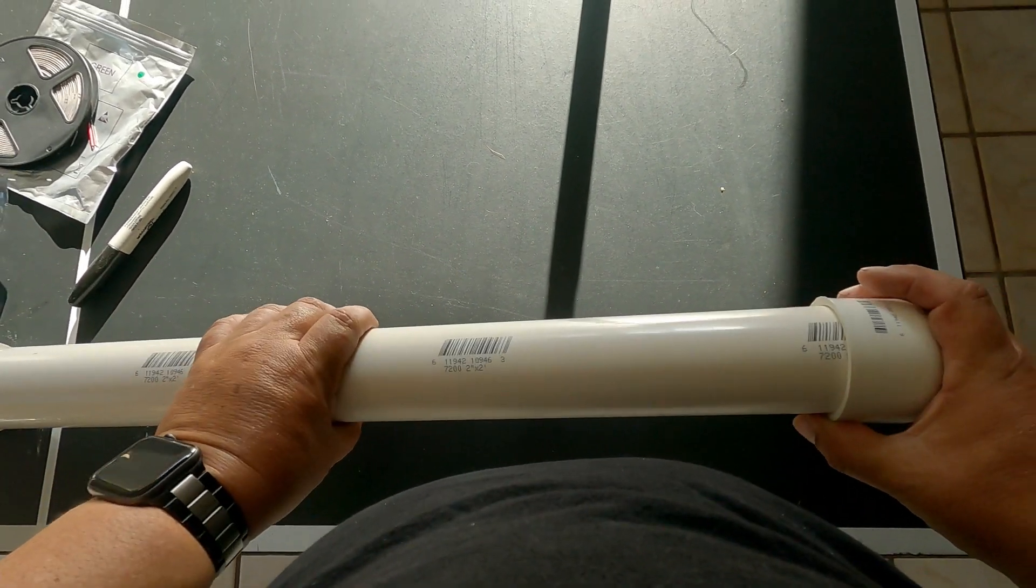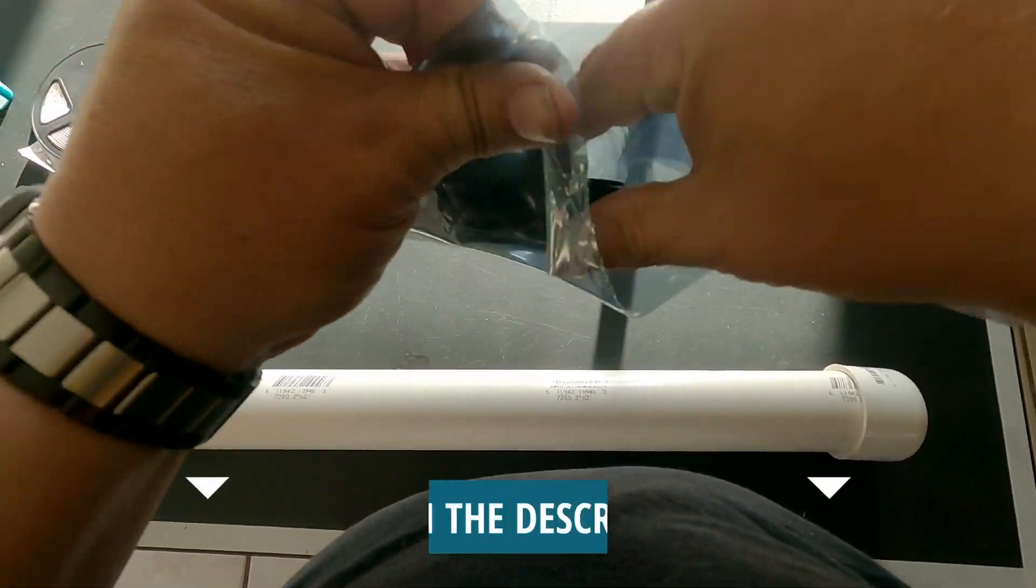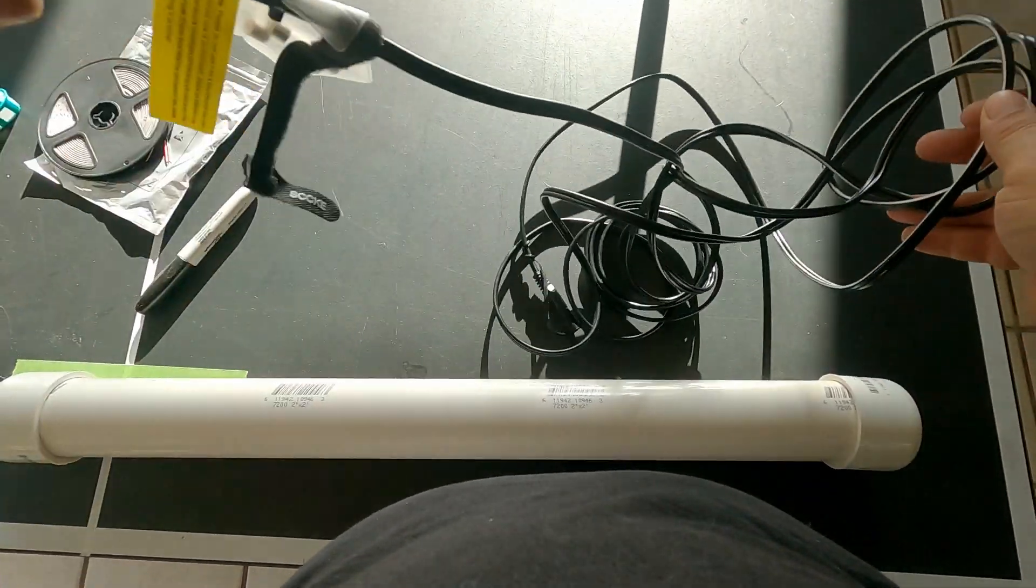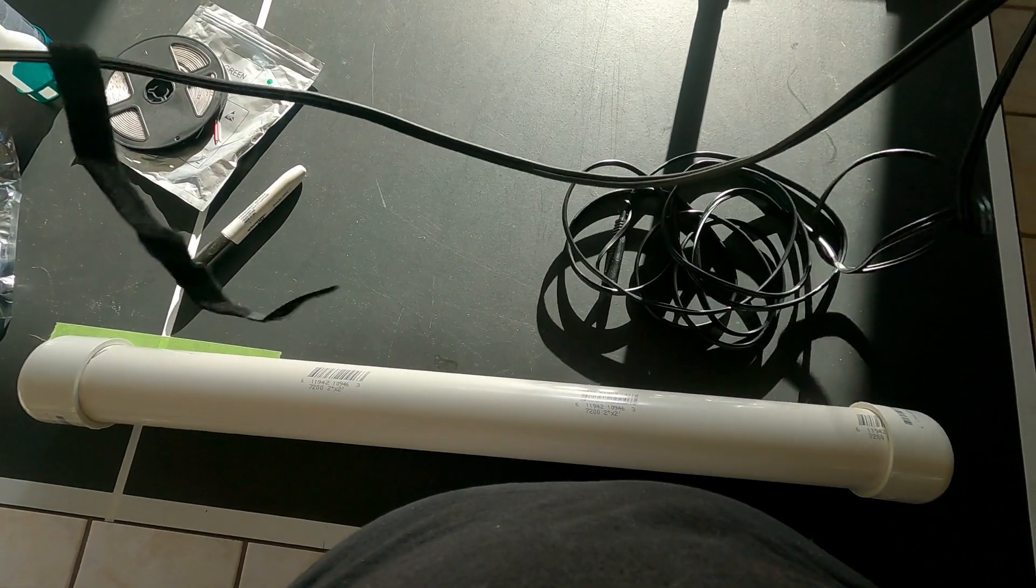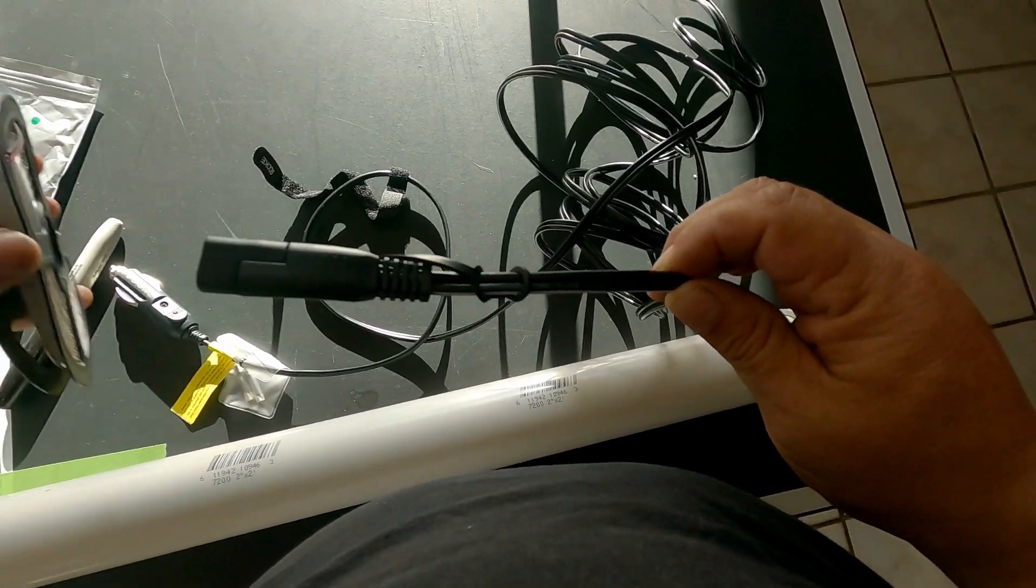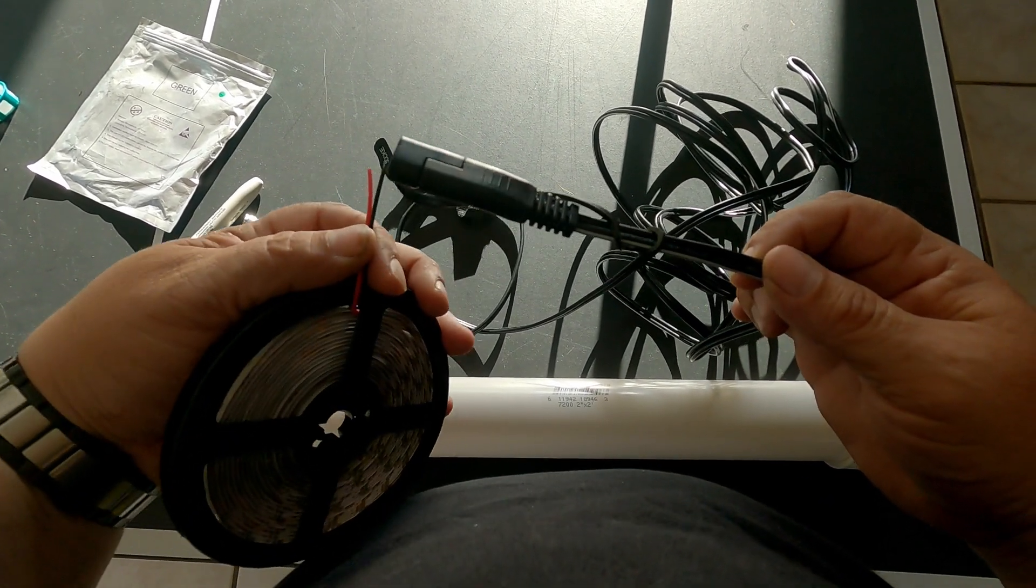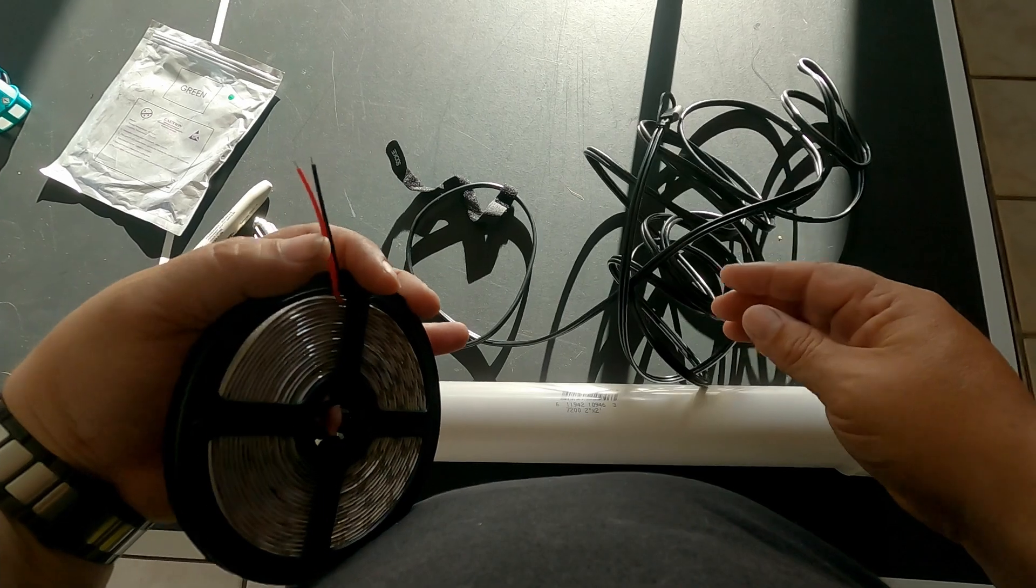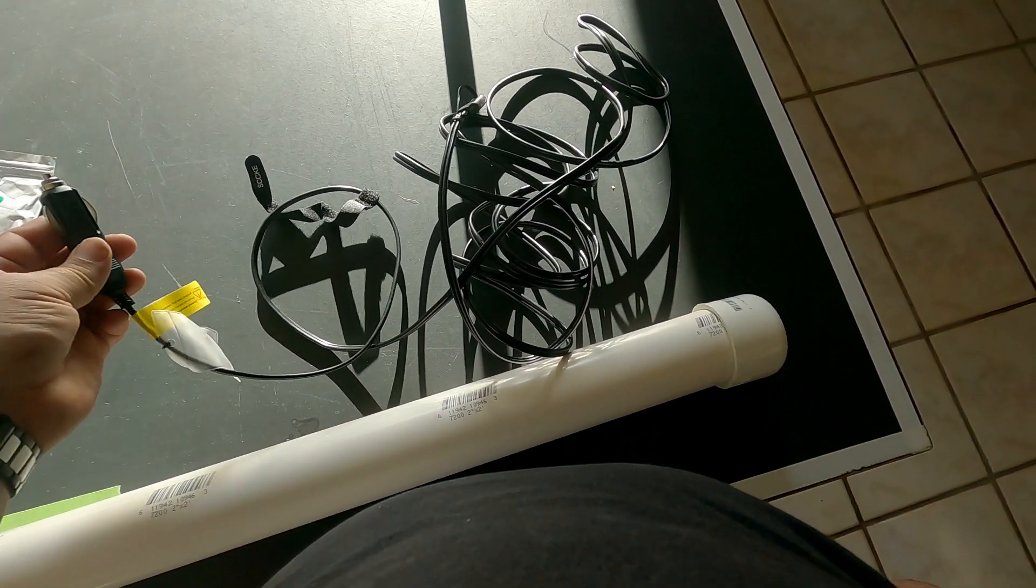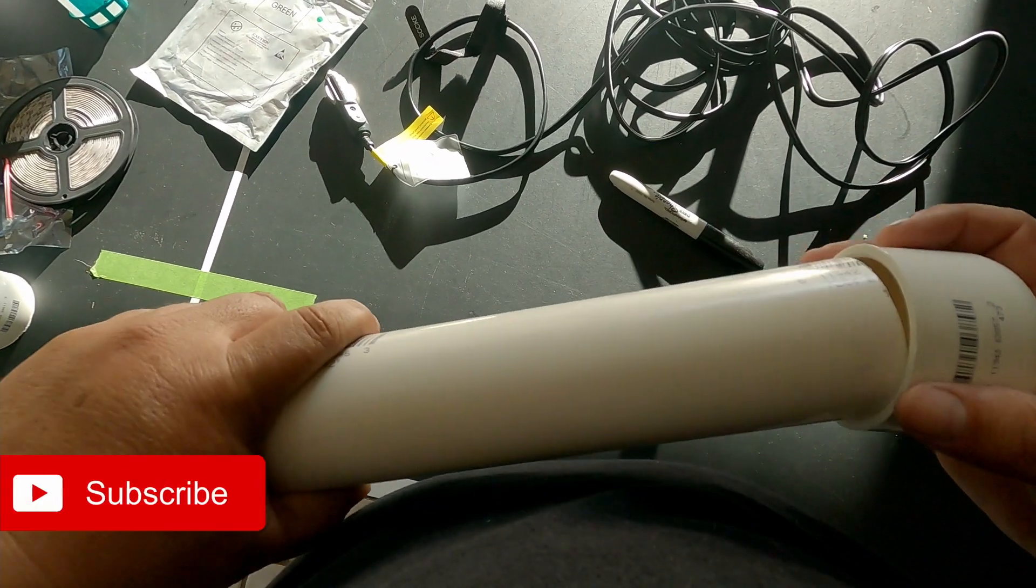And I got this cigarette lighter cable that I can plug into my battery box that I use to power up my fish finder on my kayak. I'll end up cutting this piece off, direct wiring it into here to power up the lights, and then I can use this to plug into my battery box.